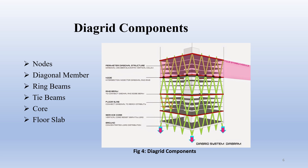First, nodes. Nodes are the joints that connect all the members. These are typically formed by bolting or welding the ends of the members to a gusset plate. Diagonal members are the members that transfer both lateral and gravity load through axial action. They can be made up of steel, concrete, timber, and composite materials.